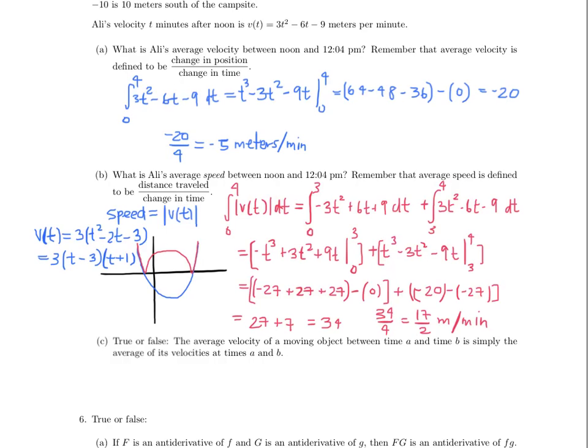And so we close with our true or false question. It says the average velocity of a moving object between time a and time b is simply the average of its velocities at times a and b. And this is actually going to be false. You can think of it this way: what if someone went starting at time a, began at rest, then went sprinting down the hallway for 10 seconds, maybe b was 10, and then stopped immediately at time b, which is 10.